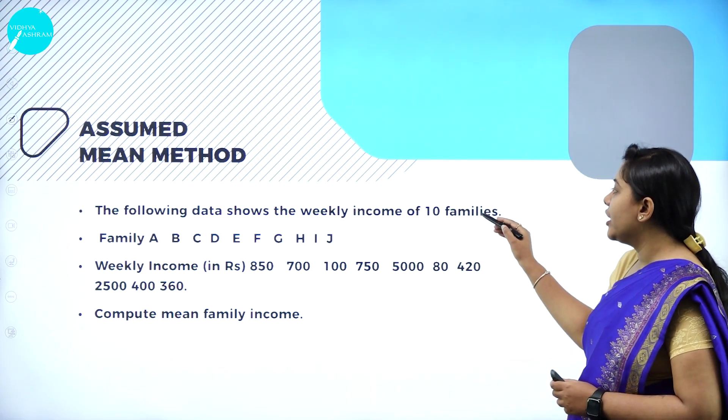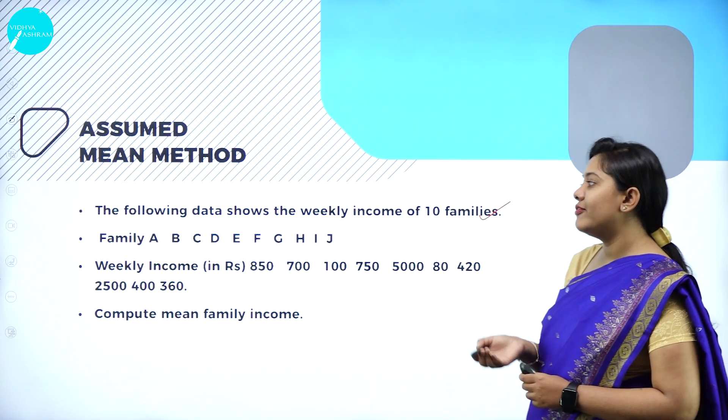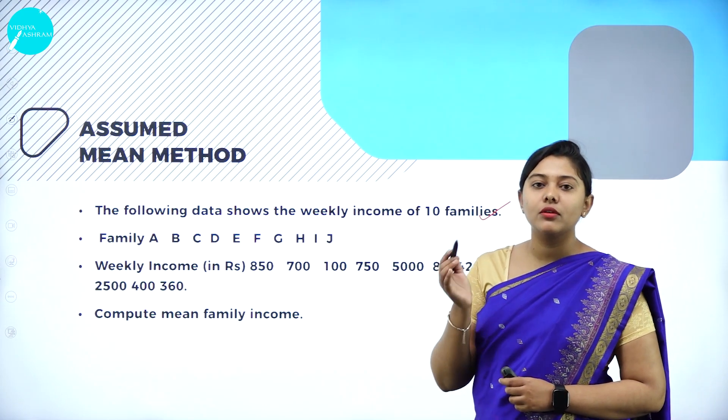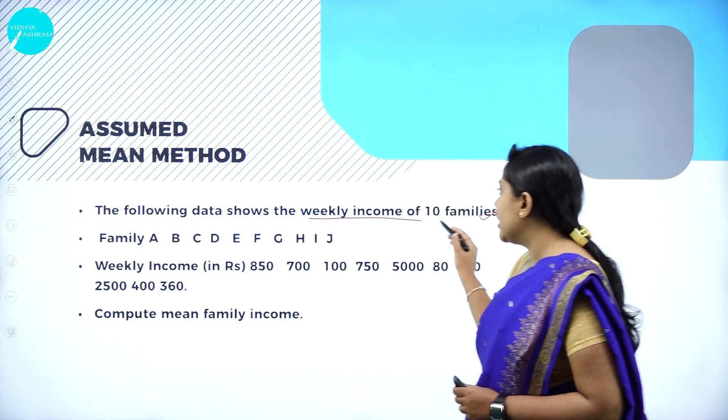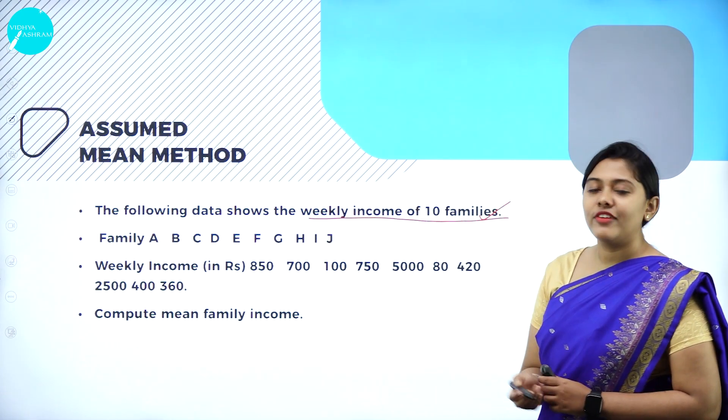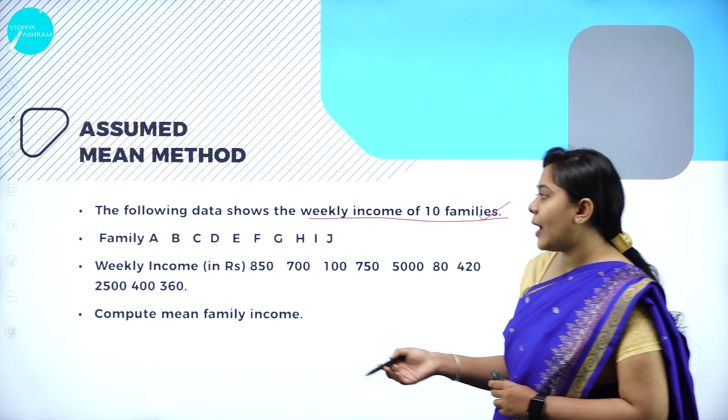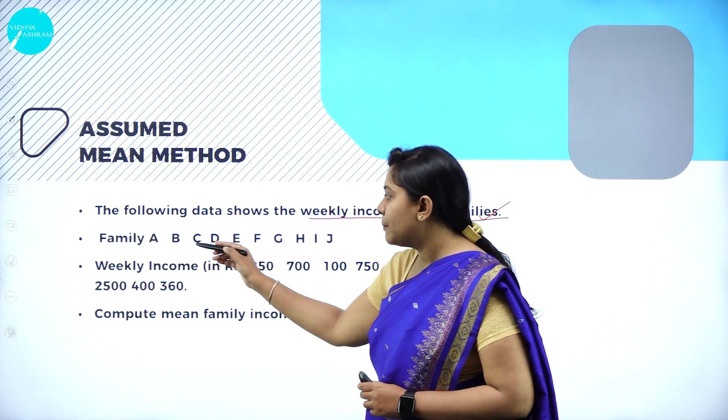The following data shows the weekly income of 10 families — families A, B, C, D, E, F, G, H, I, and J — giving us 10 observations. We need to compute the mean family income using the assumed mean method.